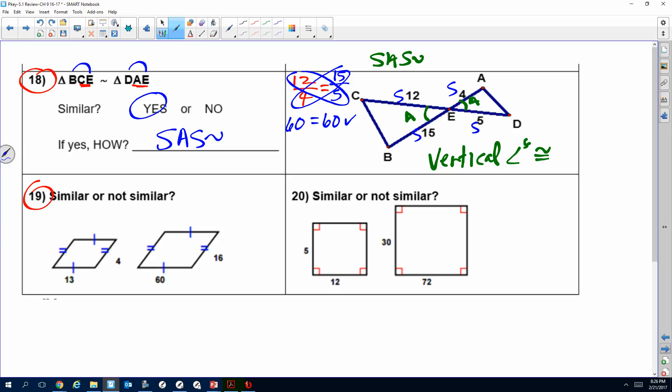Now let's look at 19. We're just trying to determine if they're similar or not. What I really need to do is just check my proportion, check my corresponding sides. This 4 had two tick marks, it's going to correspond over here. The 4 is to 16, that's 13 is to 60.